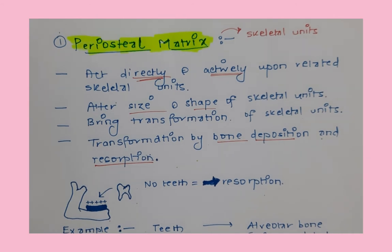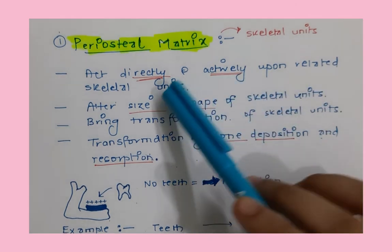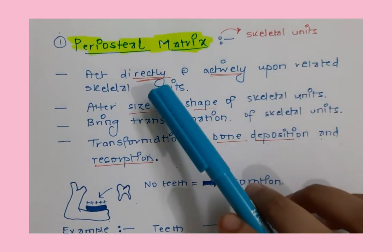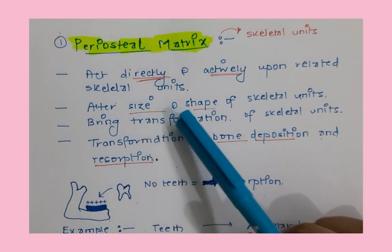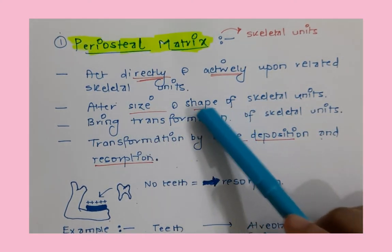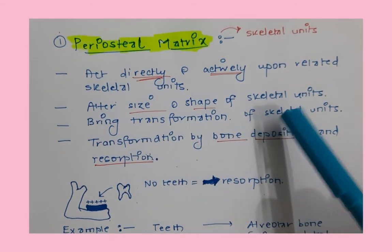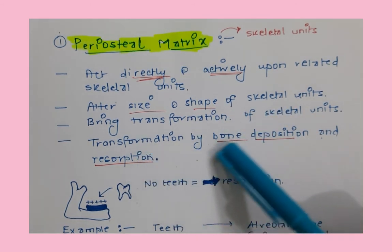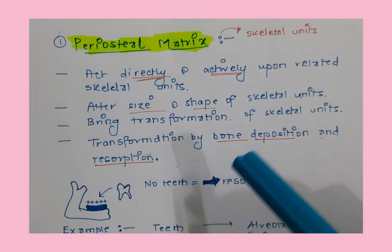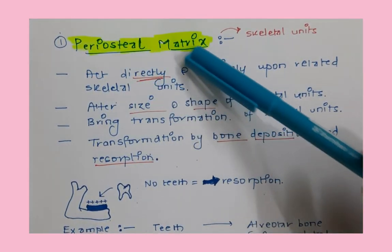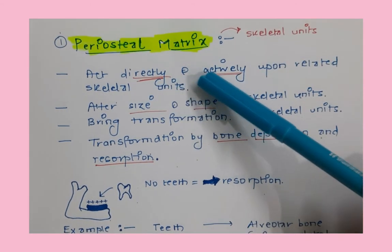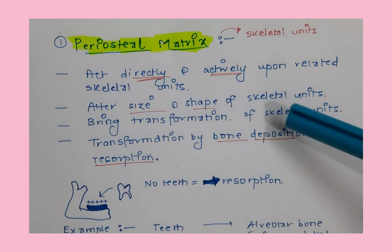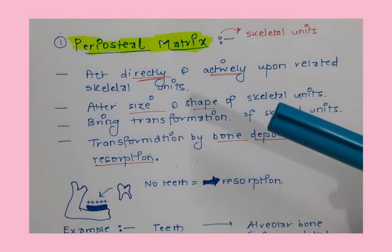Let's understand this theory in more detail. The periosteal matrix includes blood vessels, nerves, organs, and glands, and they act directly and actively upon the skeletal units — mainly microskeletal units — altering their shape and size. They bring about transformation of skeletal units not by moving them, but through bone deposition and resorption. These periosteal constituents cause transformation of the skeletal unit in that way.